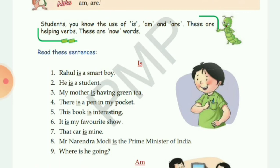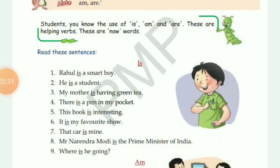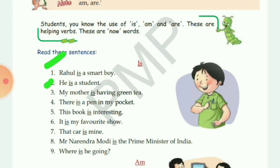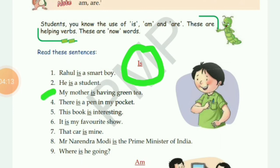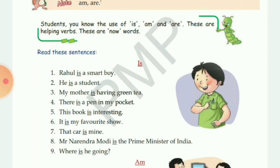Let's read some sentences. 'Rahul is' — Rahul is the name of a boy, a singular person, so we use 'is' after Rahul. 'He is my student' — 'he' is a friend of 'is', so we put 'is' after it. 'My mother is having green tea' — mother is singular, so we use 'is'. 'There is a pen in my pocket' — one pen, singular, so we use 'is'.